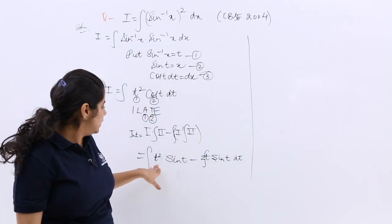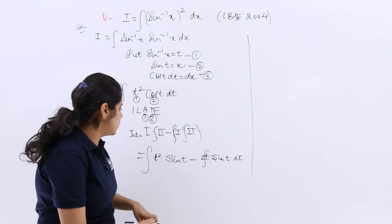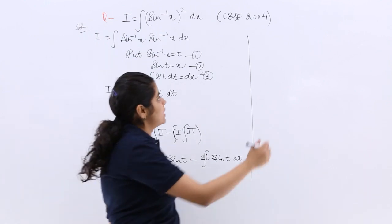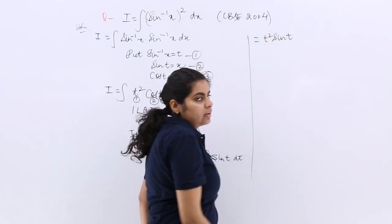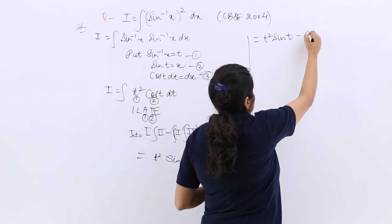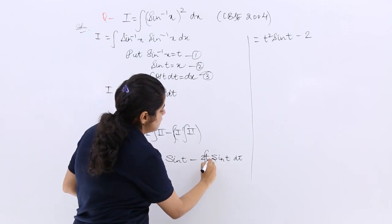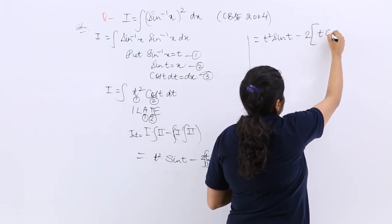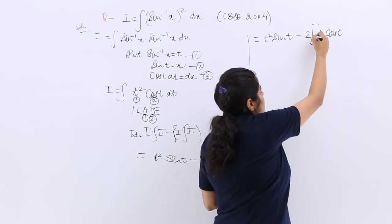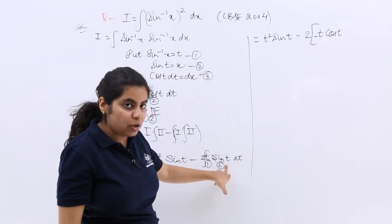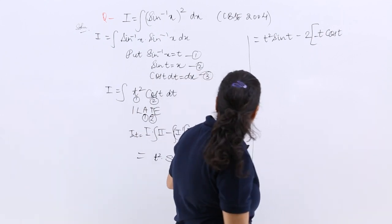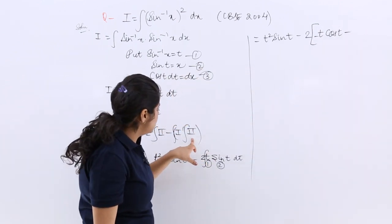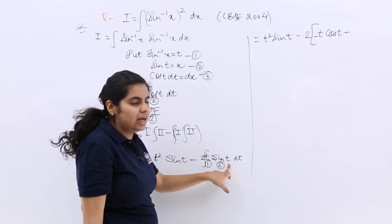It is t squared sin t. So first function into integration of second—this symbol gets removed. So it is t squared sin t then minus 2. Now again you have one algebraic, one trigonometric—first function, second function. First function into integration of second, so it is t into integration of sin, which is minus cos t. Then differentiation of first. So minus 1, or simply minus, into integration of second. Integration of second would be again minus cos t.